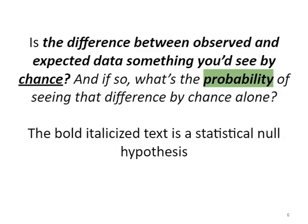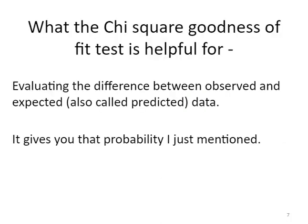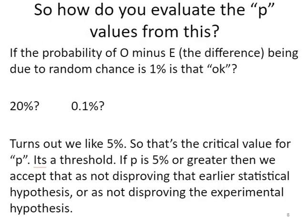We're asking the question: is the difference between observed and expected data something you'd see by chance alone, and if so, what's the probability of seeing that difference by chance alone? This is framing something called a statistical null hypothesis. The chi-squared goodness of fit test is great in these circumstances — it's good at helping you get numbers to evaluate the difference between observed and expected data, and by numbers I mean it gives you a probability that the difference between observed and expected is due to chance alone.